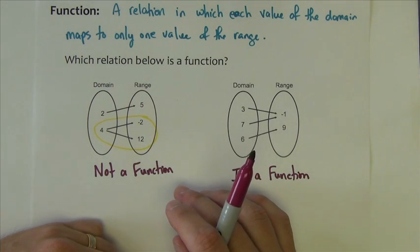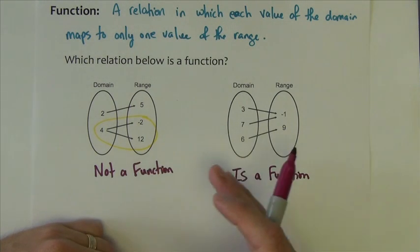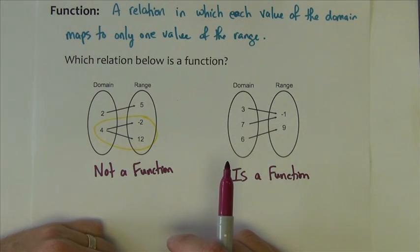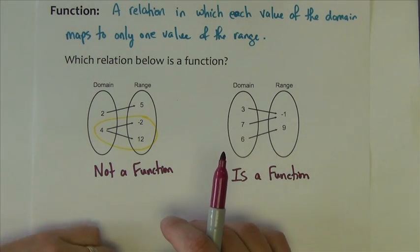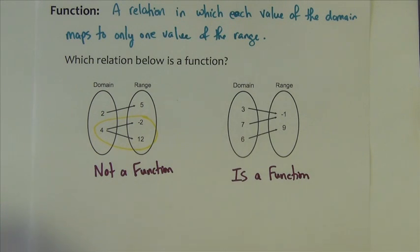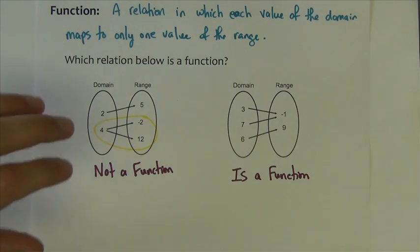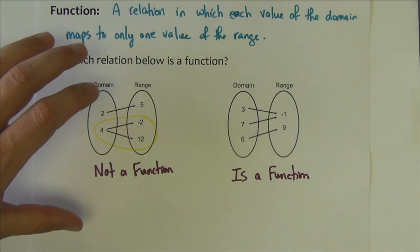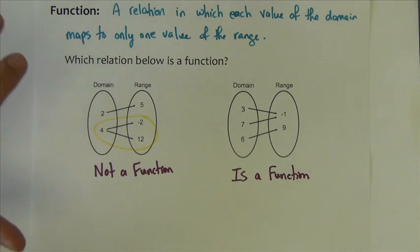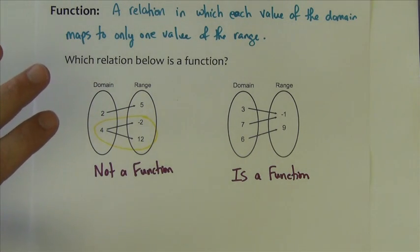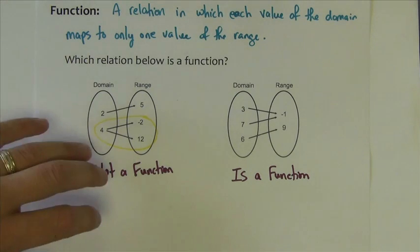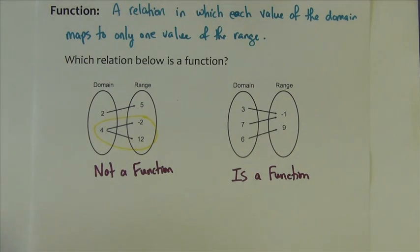So mapping diagrams are ways that we can see which x's match to which y's and we can therefore see if we have a function or not. Now, sometimes it's a good way for us to tell if we have a function or not. Like here we only had a few numbers to deal with. But if we had a whole lot of numbers, it may not be the best way to go about determining if a relation is a function. So let's show another way that we can do that.